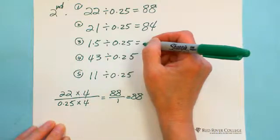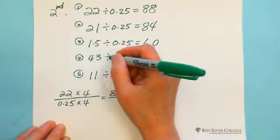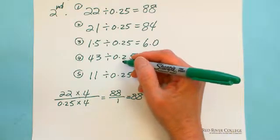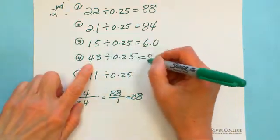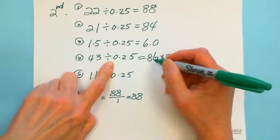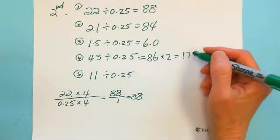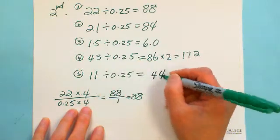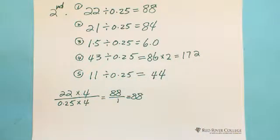43 divided by 0.25 equals 43 multiplied by 4, which is 172. Sometimes multiplying by 4 feels hard, but since 4 equals 2 times 2, you can just double twice. Double 43 to get 86, then double again to get 172. And 11 divided by 0.25 multiplied by 4 equals 44. Instead of doing long division, you just multiply by 4.